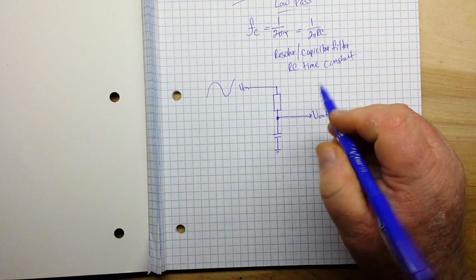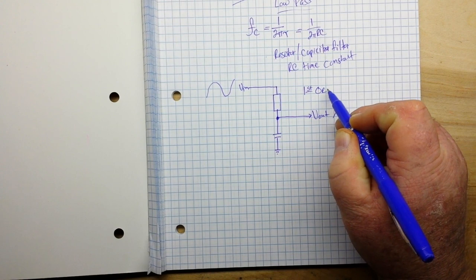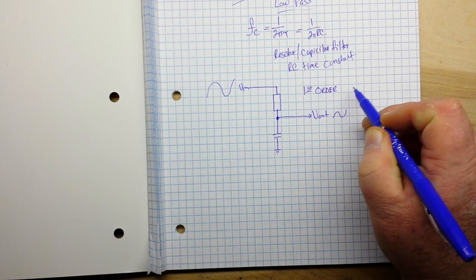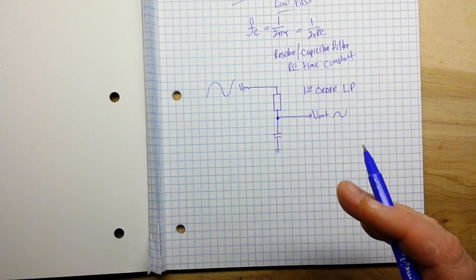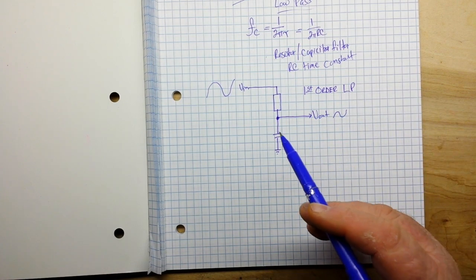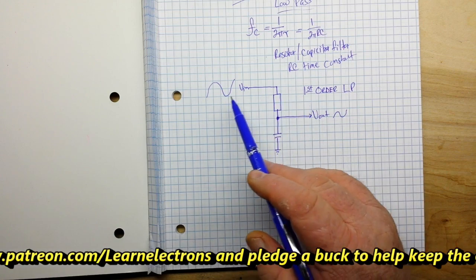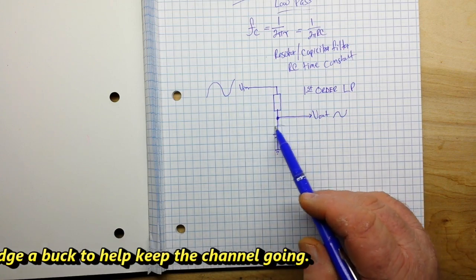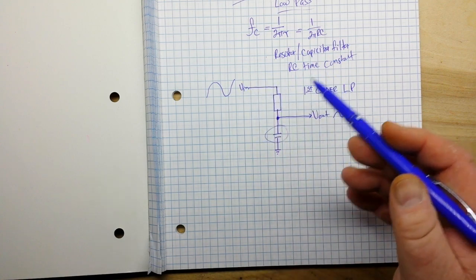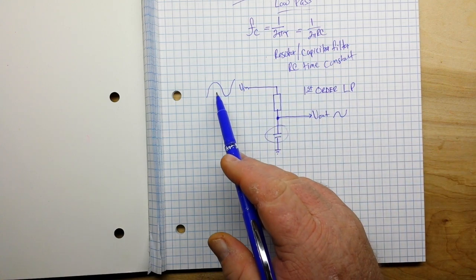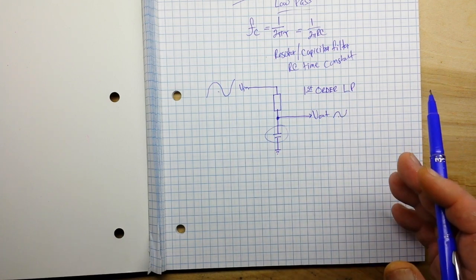This particular RC filter is called a first order low-pass filter. How does it work? Well, it works like this. At low frequencies, so the frequencies that will pass, there is plenty of time for our capacitor to charge up almost to the input voltage. So the frequency we get in is very close to the frequency we get out with a slight phase shift.